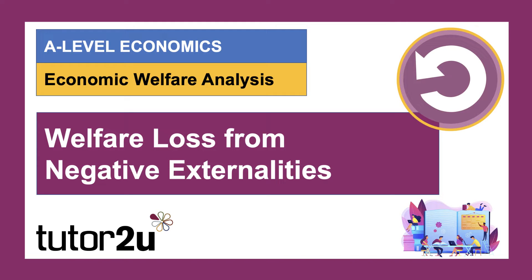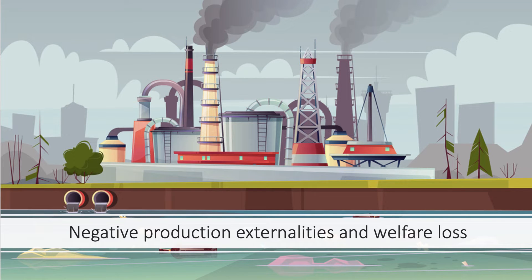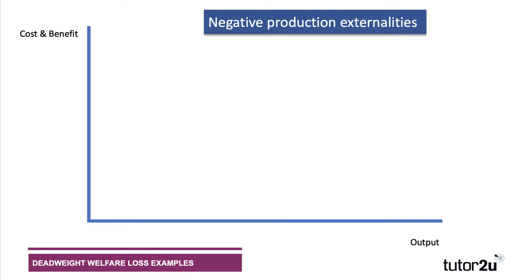Let's take a look at how you can use the concept of welfare loss when you get a question on negative externalities from production. This is a classic topic: pollution, congestion, waste, and other forms of negative production externalities. The key is to be able to show the welfare loss that results from a market failure — that's very important to getting top analysis marks in your exam.